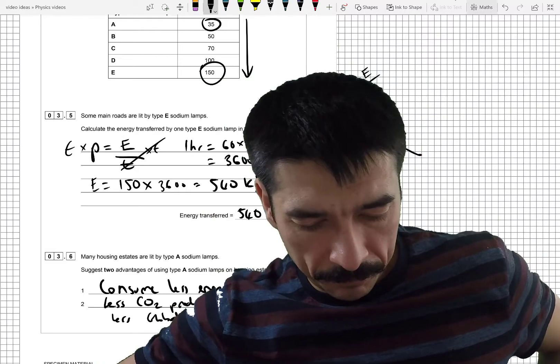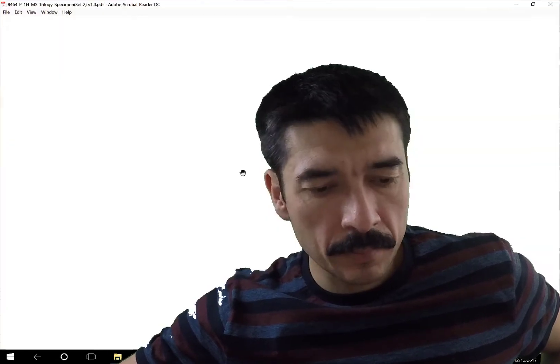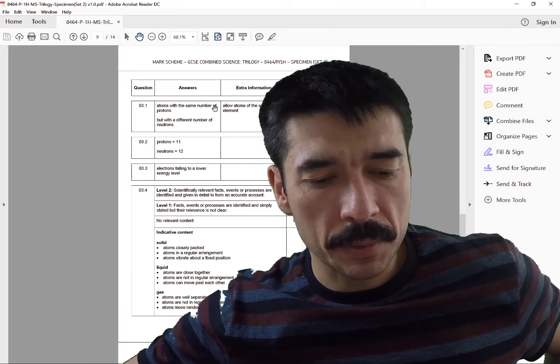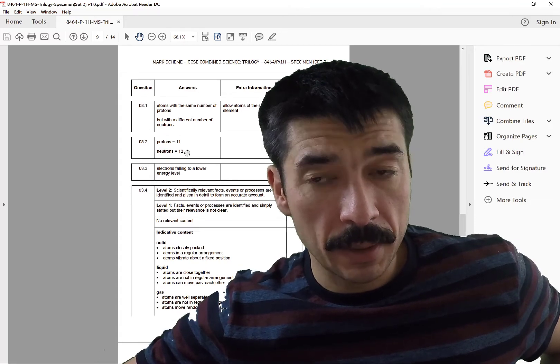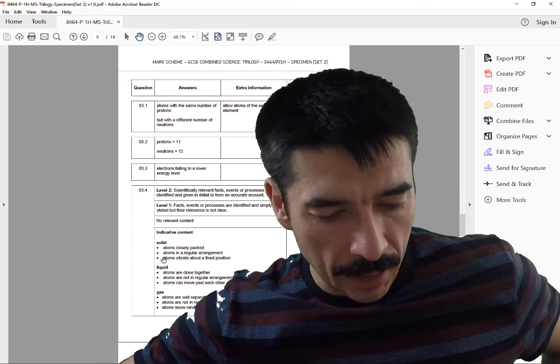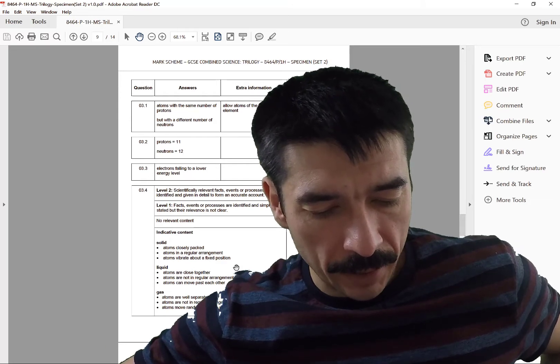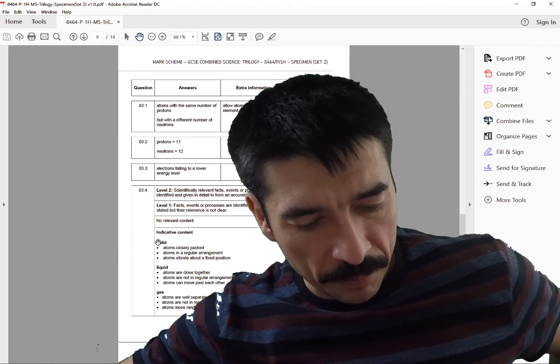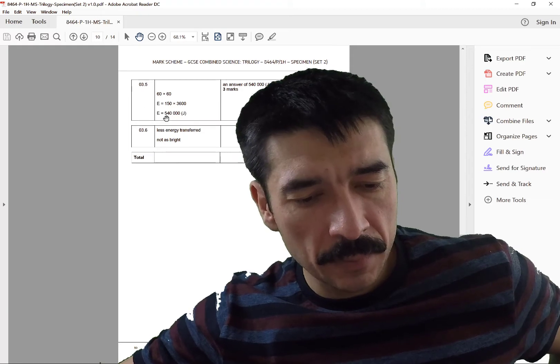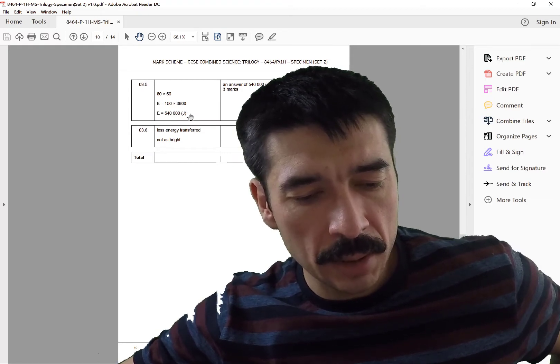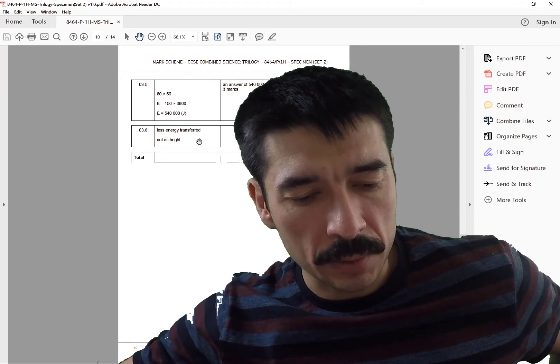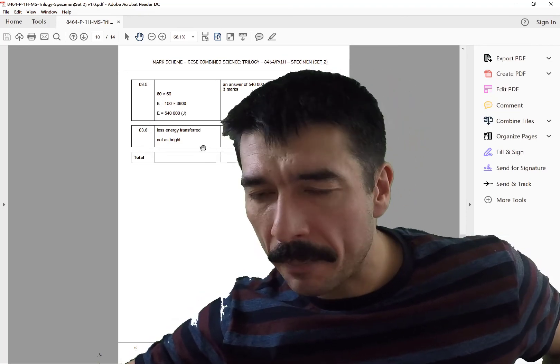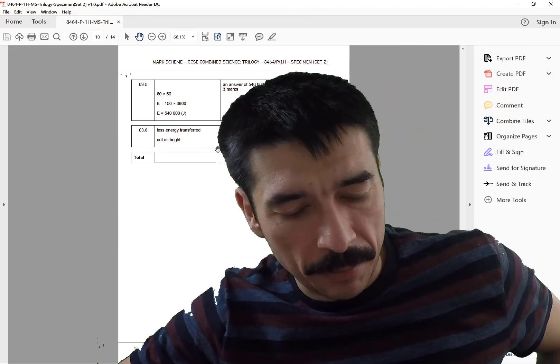Right, let's check the mark scheme. So, 3.1. Atoms are the same number of protons, but different number of neutrons. 11 and 12. Good. Electrons fall into a lower energy level. Yes. Atoms are closely packed. Atoms in a regular arrangement for a solid. Vibrate about a fixed position. I don't think I mentioned that, but it's true. So, this is just very basic Key Stage 3 stuff. 540,000 joules. Less energy is transferred. Not as bright. Hmm. I kind of find that a bit odd that that's an advantage, not as bright. Bit of an ambiguous question, but then again, it is a specimen paper.